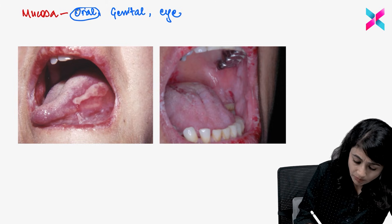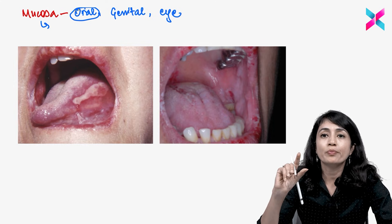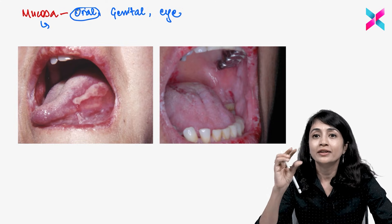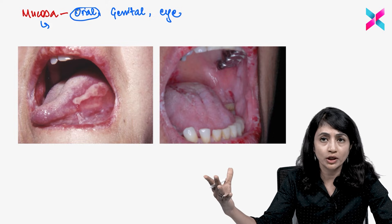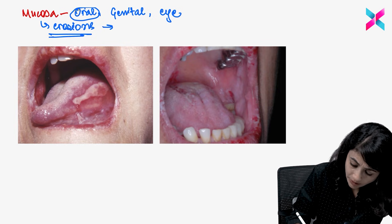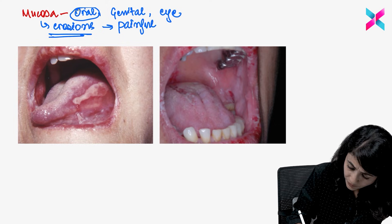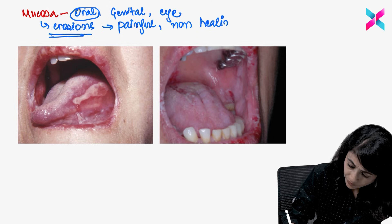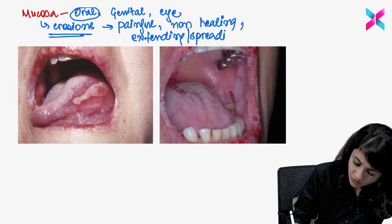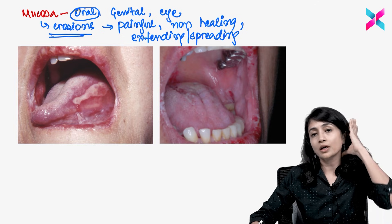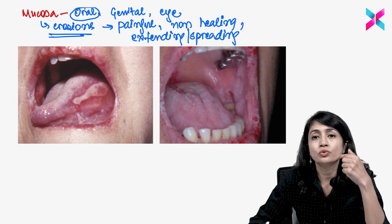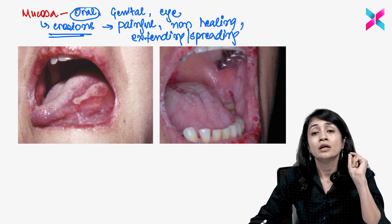And how does it present? In mucosa, there will be formation of a vesicle or bulla first — there will be formation of fluid collection. But because of the constant chewing, talking, and trauma, this vesicle or bulla will break off. So you hardly see a vesicle or bulla in the oral mucosa. What you see are erosions — erosions which are painful, non-healing, and extending or spreading. You typically have painful, non-healing erosions. Patients can have erosions in the oral mucosa like aphthae and other things, but those heal. Here, the patient will come to you with erosions in the oral mucosa which are non-healing and spreading gradually.